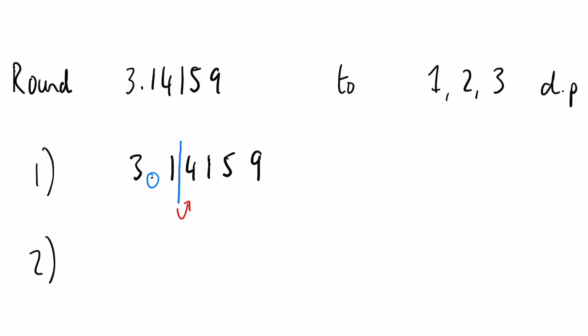And from the basic rules of rounding, if that number is 5 or above, so 5, 6, 7, 8, or 9, then the number before, so the 1 in this case, would go up to 2.